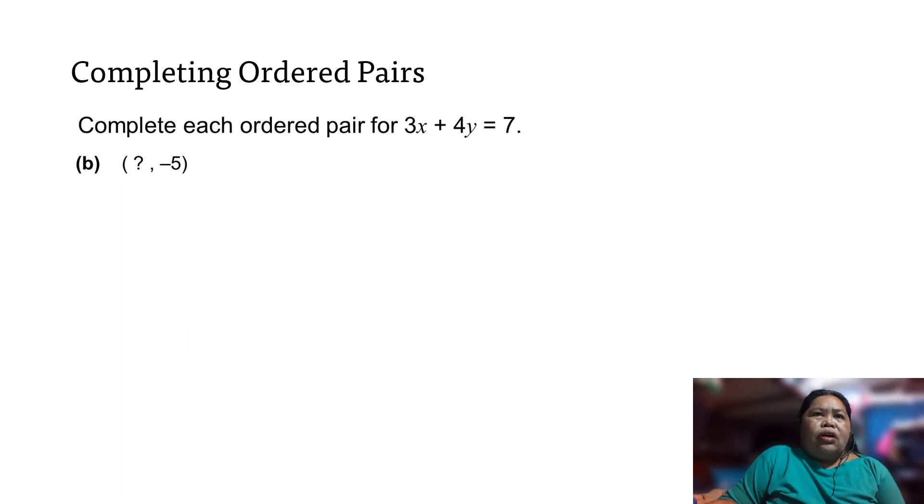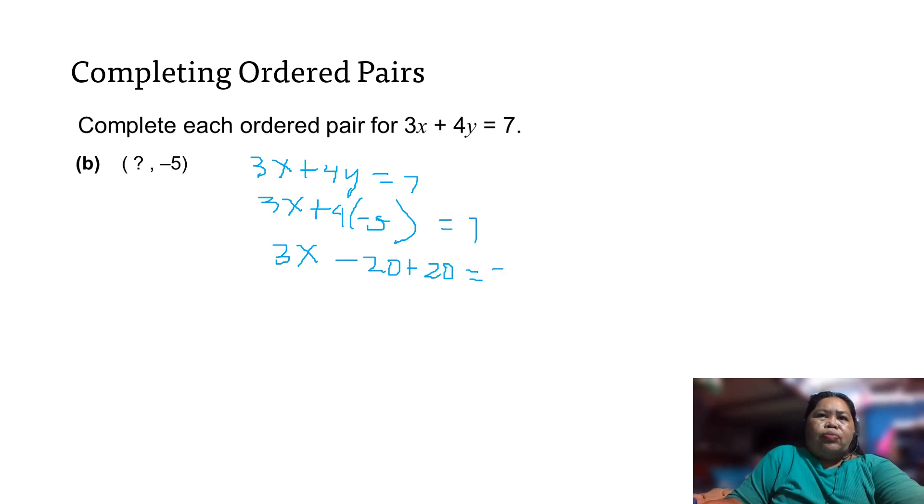Okay, now let's try this one. From 3x + 4y = 7, if your y is -5, we have 3x + 4(-5) = 7. So we have 3x - 20 + 20, just like the previous example. This is how we do it. So we got 3x = 27, divided by 3. Cancel this one. x = 9.